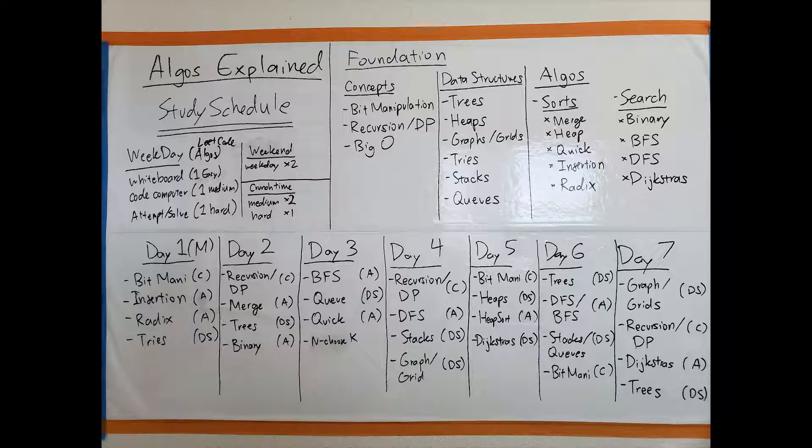When I say code me merge sort, I want you to be able to create that whole algorithm. When I say data structures, I want you to be able to code these whole classes. When I say build for me a tree, that means build for me a tree class. When I say build for me heaps, a heap class with insertion, deletion, everything.